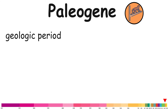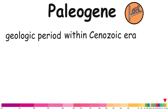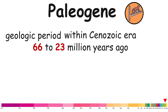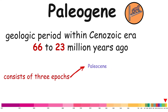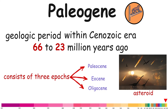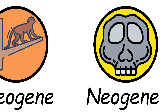Paleogene. The Paleogene is a geologic period within the Cenozoic era, spanning approximately from 66 to 23 million years ago. It consists of three epochs: the Paleocene, Eocene, and Oligocene. During this period, an asteroid killed the dinosaurs and most species on Earth. The continents look roughly the same as today, and mammals took over.